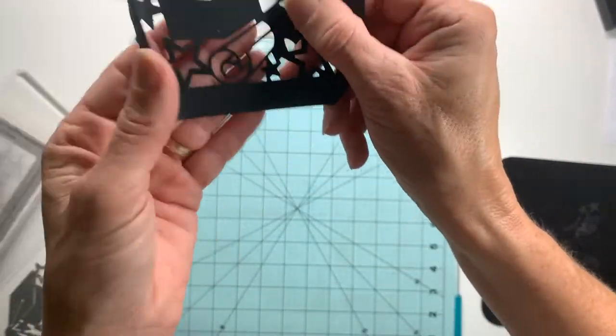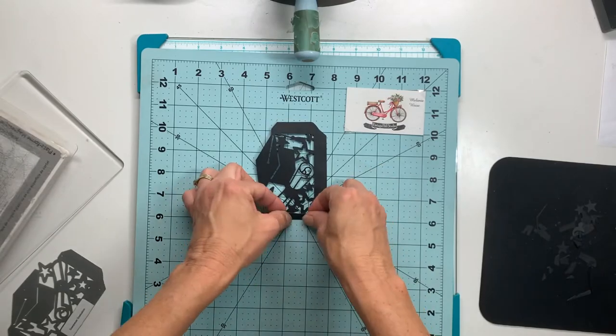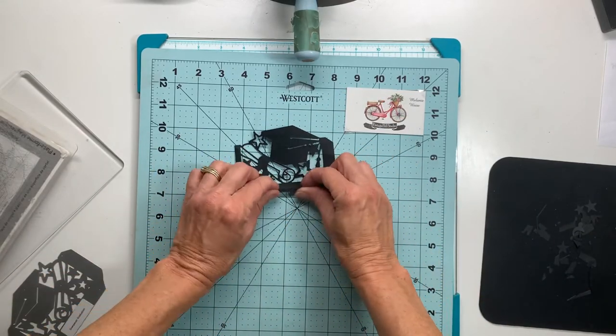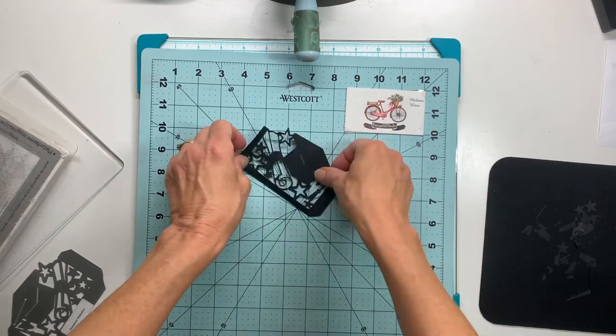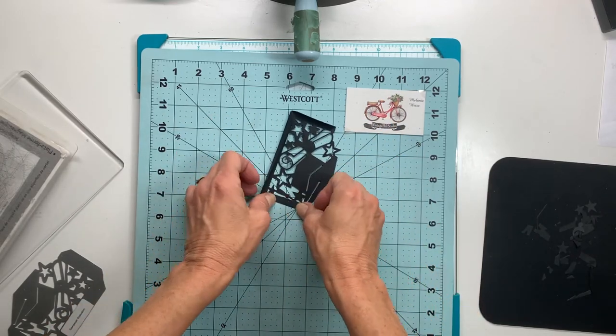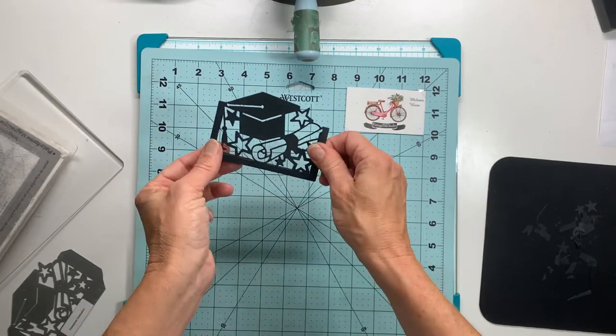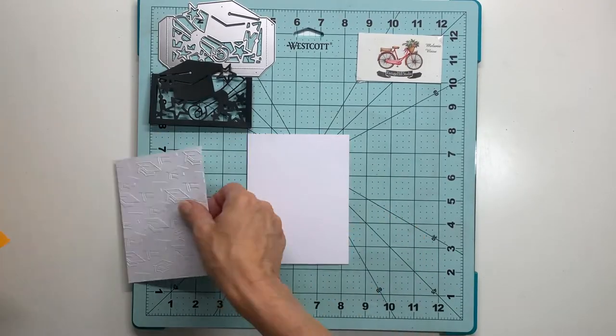You can see there are some little score lines that the die makes and I'm not sure what that was for. There are no instructions that come with this die, so I'm just winging it here. I did measure it and it happens to fit perfectly over my white mat, which was four by five and a quarter.